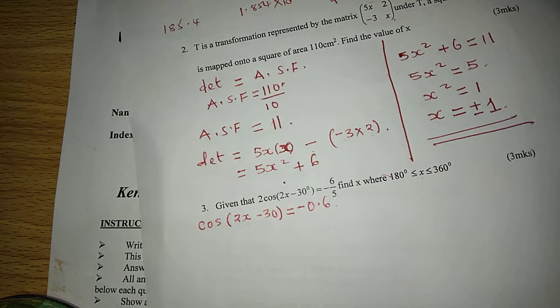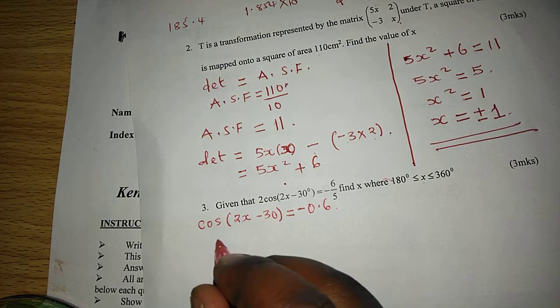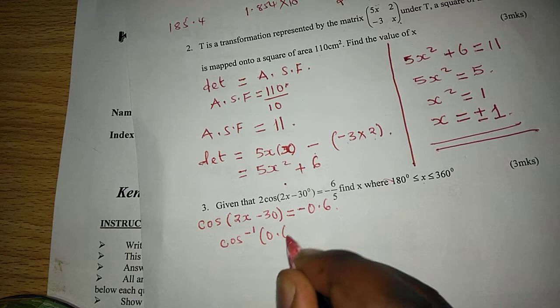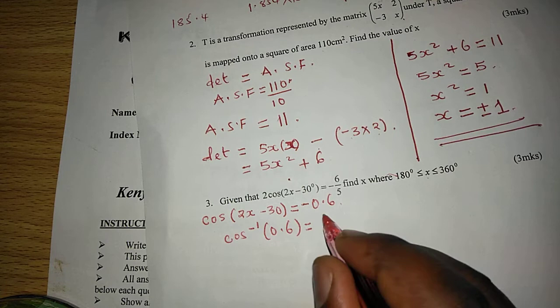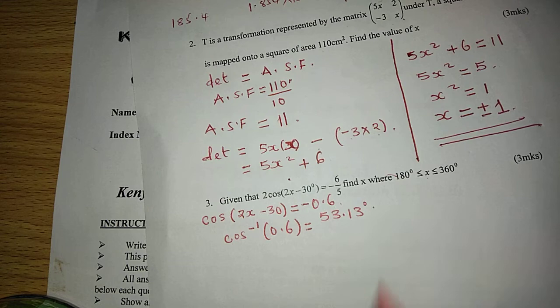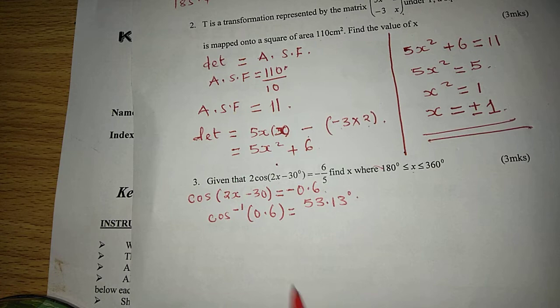So with negative 0.6, now we can get the acute angle where cosine is 0.6. So the acute angle, the cos inverse of 0.6 is 53.13 degrees. But now because the cosine is negative, we want this acute angle in the quadrants where cosine is negative.